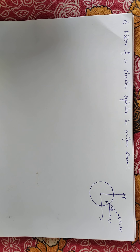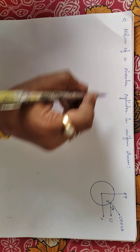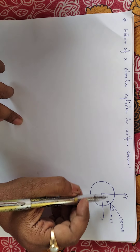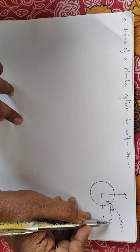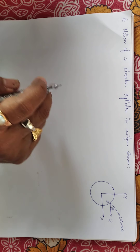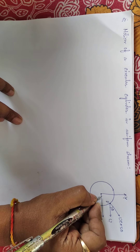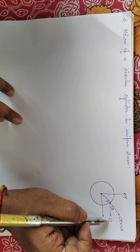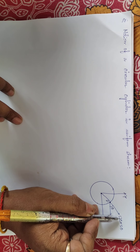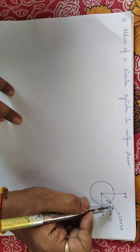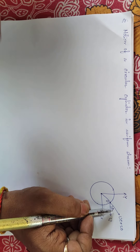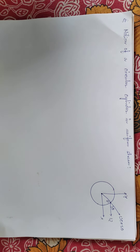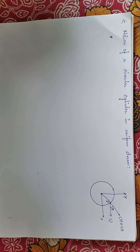Good afternoon students. Today we will discuss the motion of a circular cylinder in a uniform stream. Suppose this is the circular cylinder and the cylinder is moving with constant velocity U along this direction. This is our radial direction, so the component of this velocity along the radial direction will be U cosine of theta, where theta is the angle of inclination with the horizontal line and the radius vector.